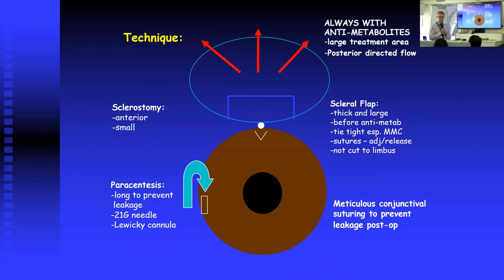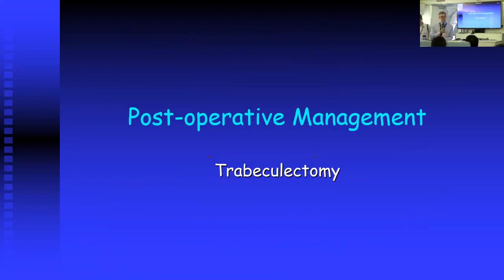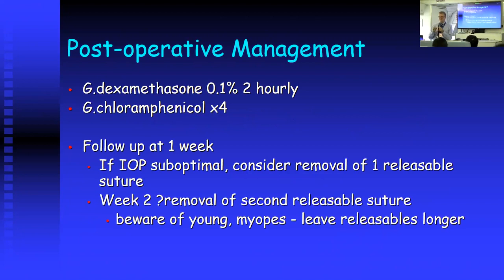Here is a drawing of the features we use to achieve a good trabeculectomy — encouraging posterior drainage, the scleral flap not cut to the limbus, and meticulous conjunctival closure. Postoperative management is equally or more important than the surgery itself. We want to avoid any scarring and encourage early drainage. We use very frequent steroids — every one or two hours — combined with an antibiotic. The benefit of releasable sutures is that if the pressure is not at the optimum level they can be removed as early as one week after surgery.